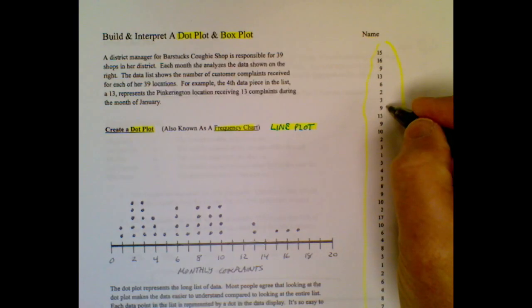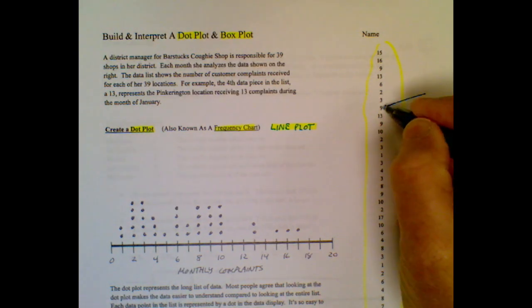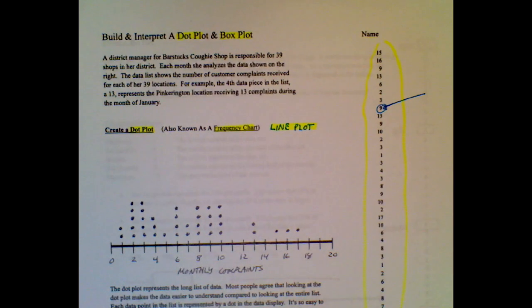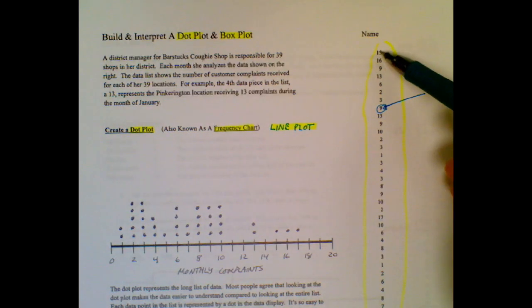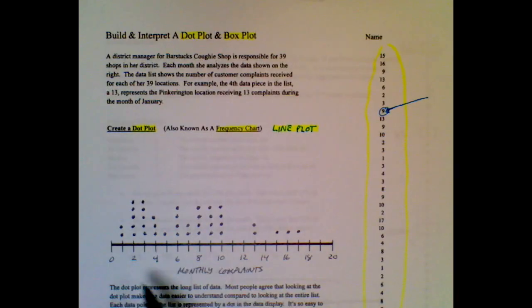So for example, on a certain month, I think this is per month, this location had nine complaints. Well, what we're going to do is we're going to take each one of these individual data points and just put it on a scale.